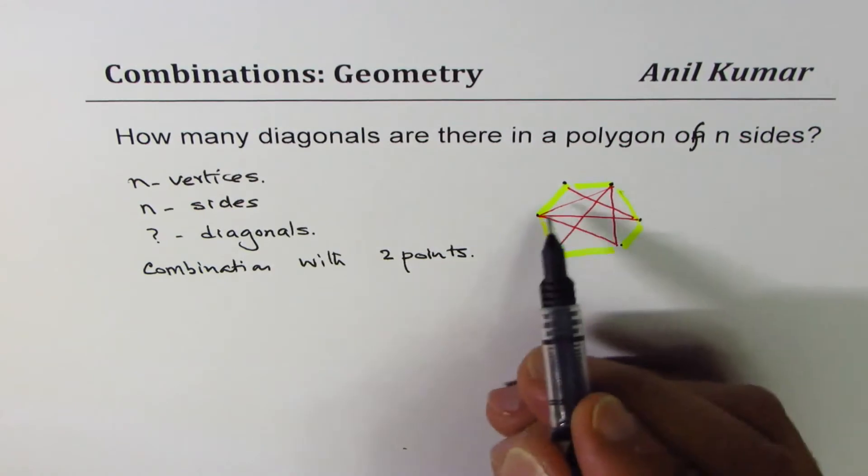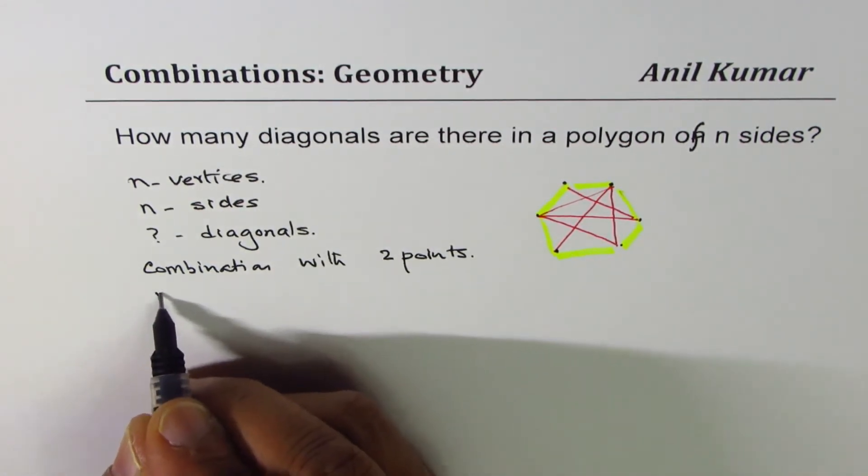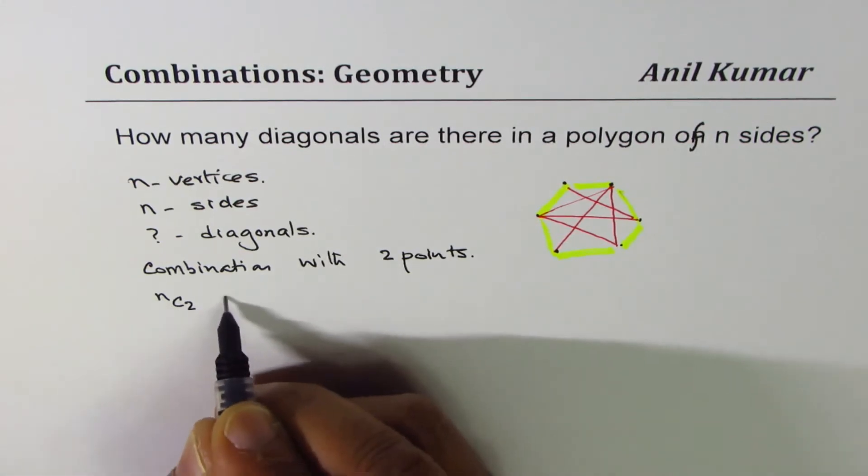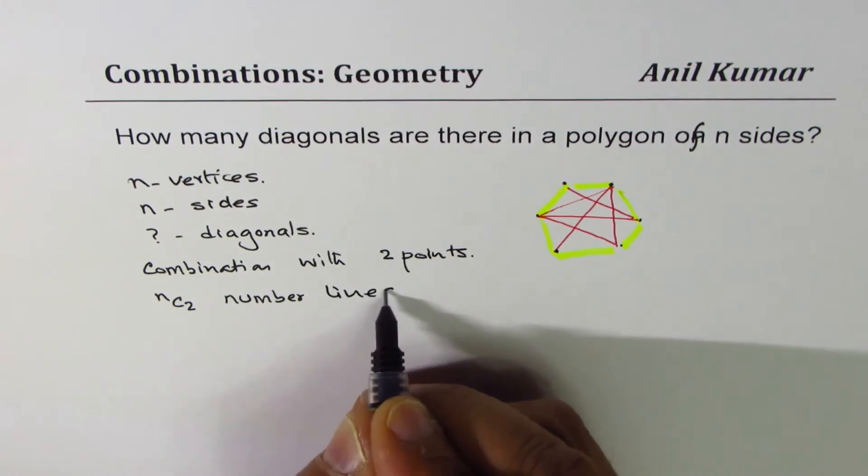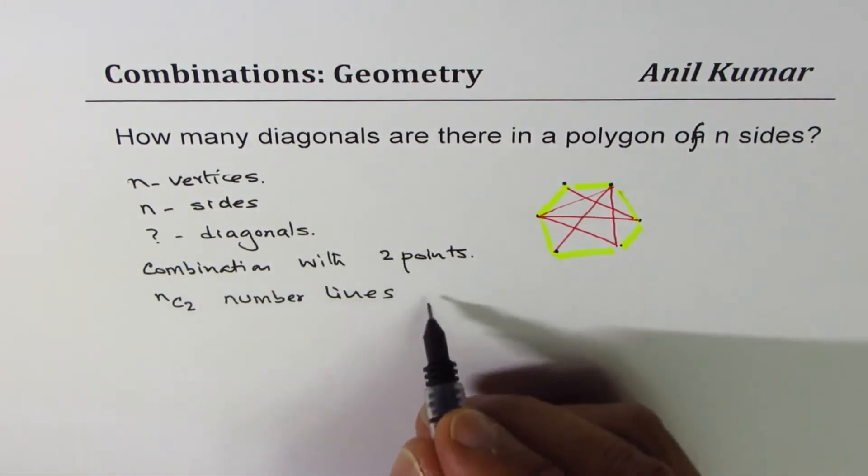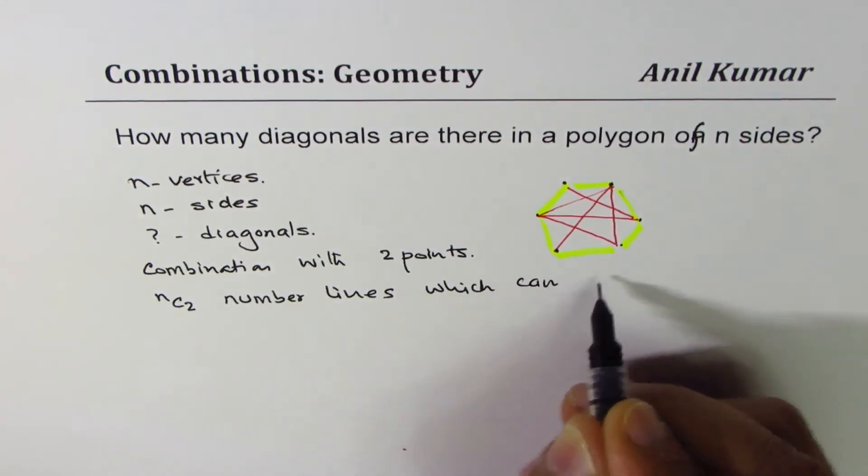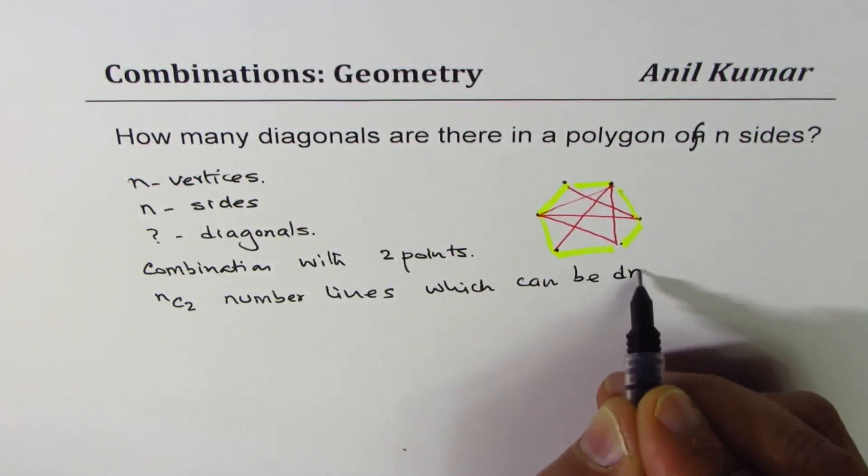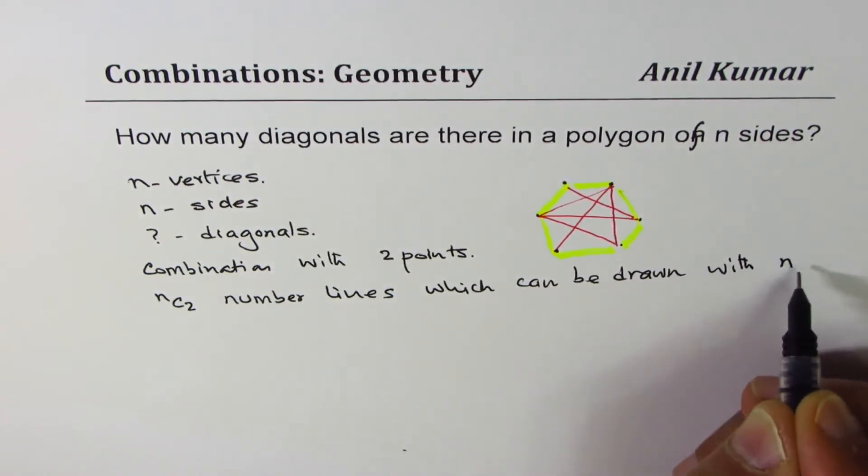And how many sides or points we have? We have n points. So nC2 is number of lines, total number of lines. nC2 is the number of lines which can be drawn with n points.